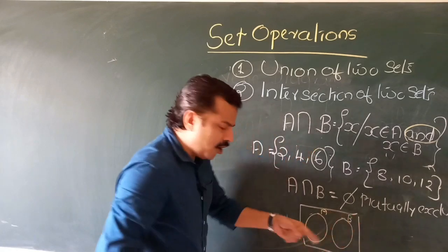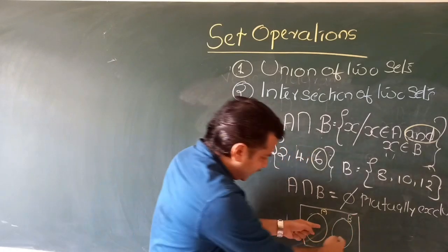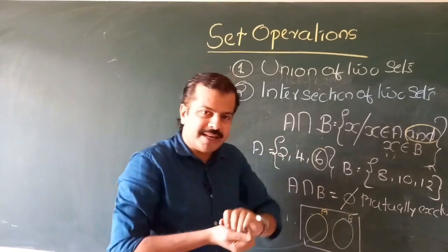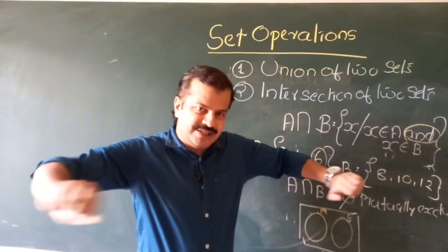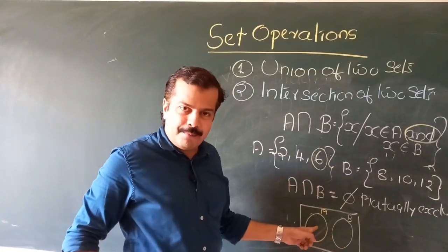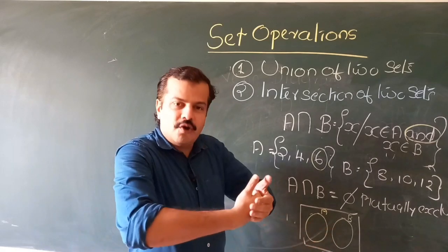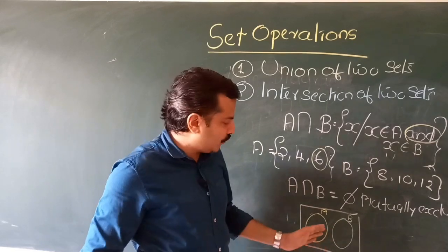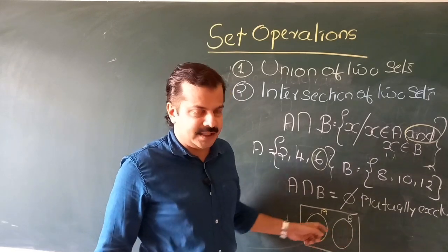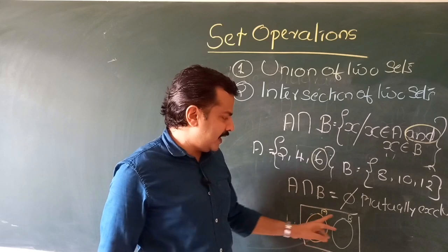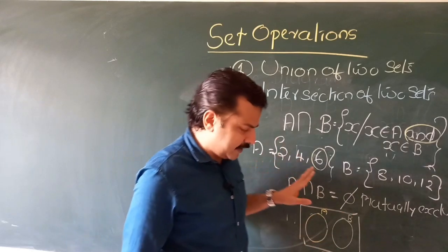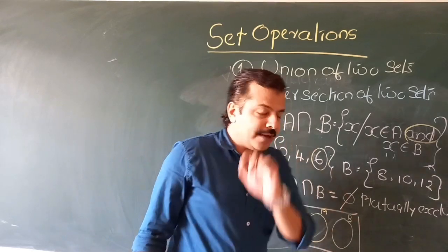When we draw the Venn diagram of disjoint sets, the circle for set A and the circle for set B will not overlap at all — they will be completely separate. This is why we call them non-overlapping or disjoint sets: there is no convergence between the two circles representing set A and set B.